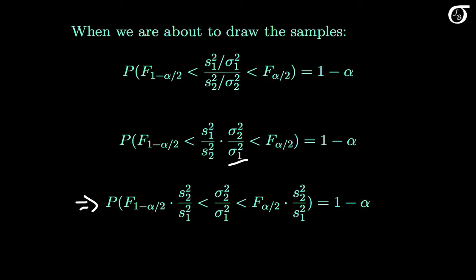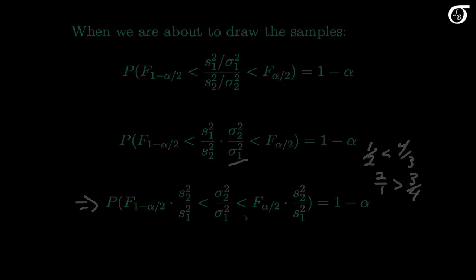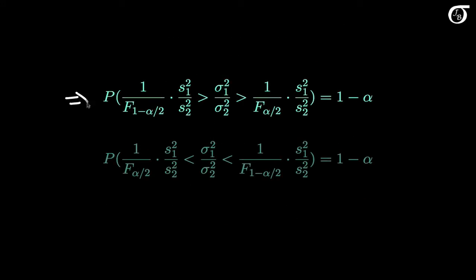So we're going to take the reciprocals of these three quantities. But when we do that, these inequalities are going to change direction. For example, 1/2 is less than 4/3, but when we take the reciprocals, 2 over 1 is greater than 3 quarters. So we take the reciprocals of these three quantities and change the direction of the inequalities. It's better formed to put the smaller value on the left, so we'll move that to the left. And we end up with the probability that sigma 1 squared over sigma 2 squared gets captured between these two quantities being 1-alpha.